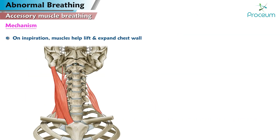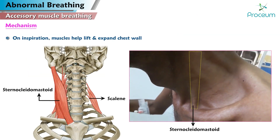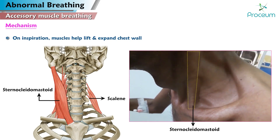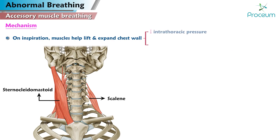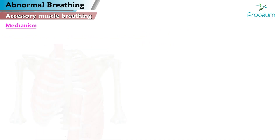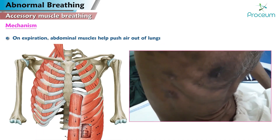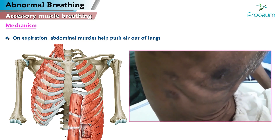On inspiration, the scalene and sternocleidomastoid muscles help lift and expand the chest wall, allowing for a decrease in intrathoracic pressure and increased air entry. On expiration, the abdominal muscles help push air out of the lungs.